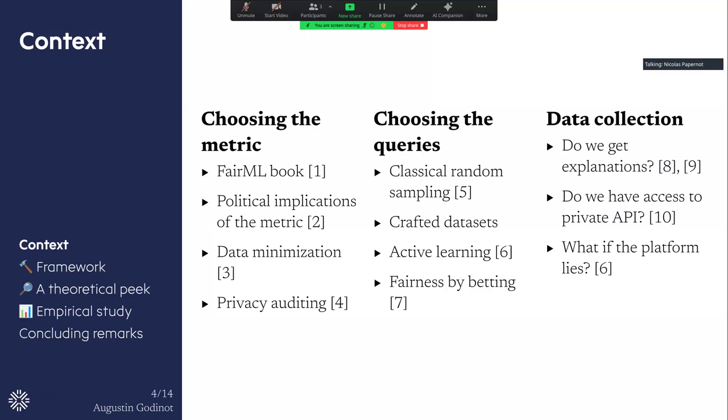So as I said, we have three steps that we have to define as a regulator here. Choosing the metric is already done in the literature. This is understanding, for example, the impact of the metric that we choose. Then we have the choice of the queries. So what are the biases that are associated with each technique to choose a query? So random sampling or top K, et cetera, have different implications.